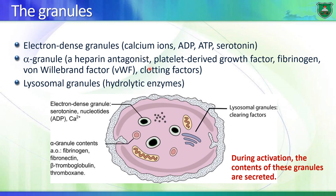The ADP and ATP inside these vesicles are not used as sources of energy - rather they are used as signaling molecules. You also have alpha granules inside platelets, which contain heparin antagonists, the signaling molecule platelet-derived growth factor, the structural protein fibrinogen, a regulatory protein known as von Willebrand factor, and numerous clotting factors. Then you have lysosomal granules containing hydrolytic enzymes, which are necessary for removal of the clot and activation of different proteins.